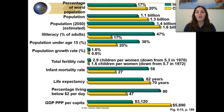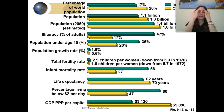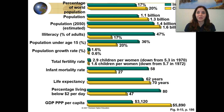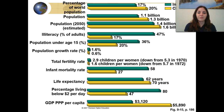Looking at the percent living below $2 a day: in India, over 80% of people are living on less than $2 a day — a huge number. If you think about going to McDonald's, $2 might get you a large order of fries or a cheeseburger, and that's it. In China, it's 47%. Then there's the gross domestic product per capita.